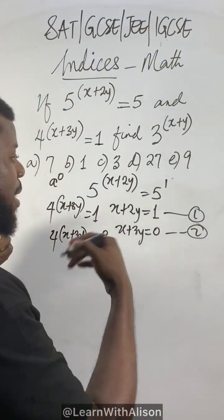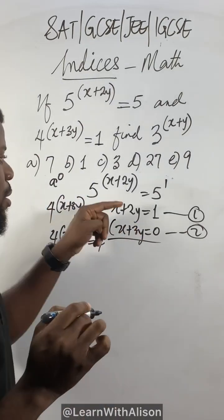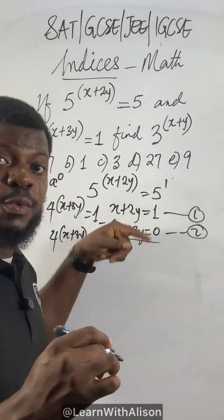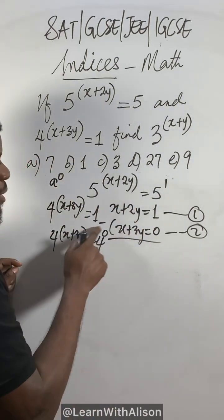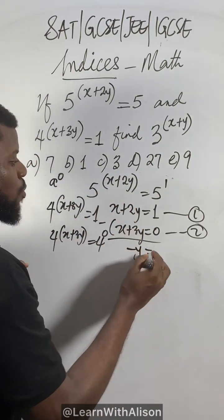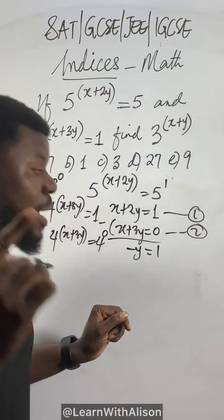I've gotten a pair of simultaneous equations. I need to apply any method; it could be elimination method. How do I eliminate? I subtract equation 1 from equation 2, equation 2 from equation 1, anyway it works. So x minus x will give us 0.